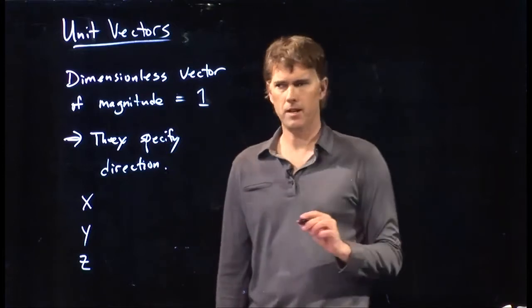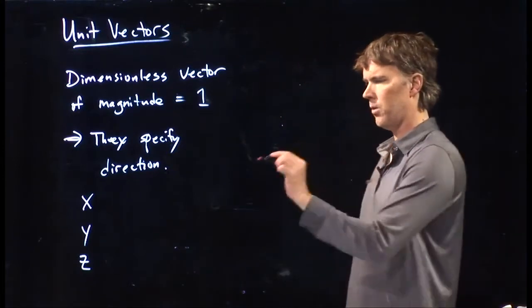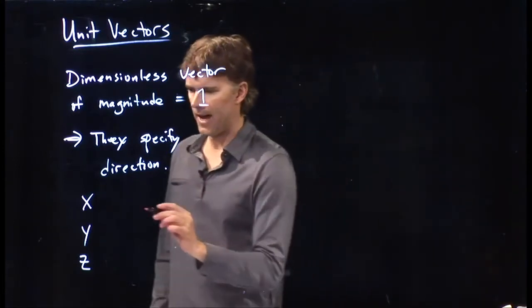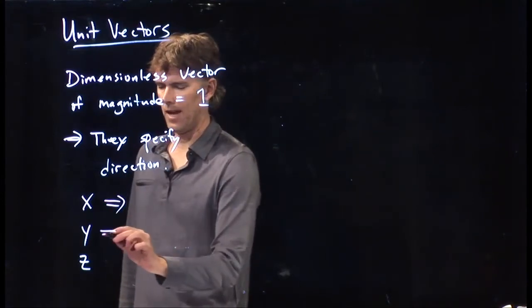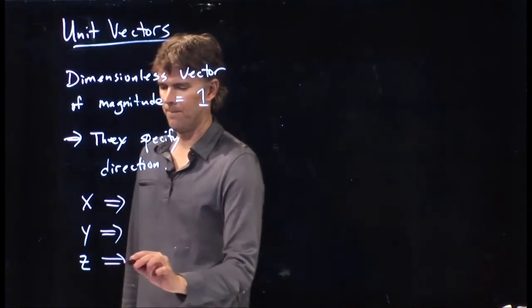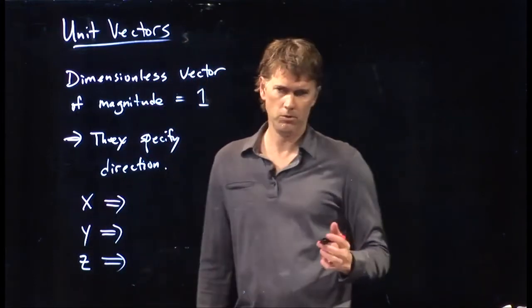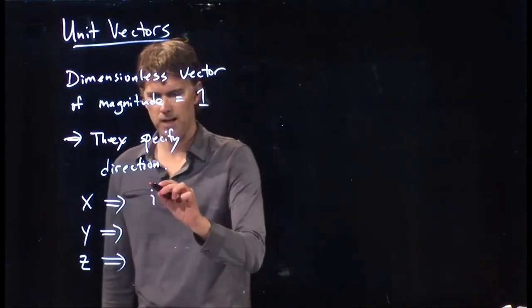And so we'd like to identify unit vectors that correspond to the x-axis, the y-axis, and the z-axis. And the ones that we choose are i, j, and k.